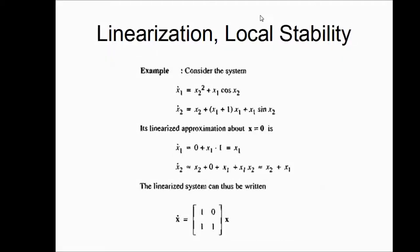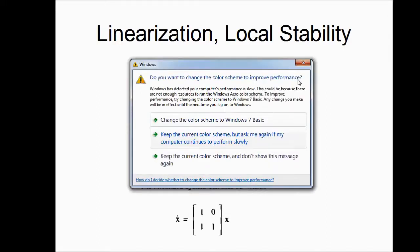Linearization and local stability. If we consider this non-linear system and linearize about the equilibrium point — the equilibrium point for this is (0,0), as may be checked from the right-hand side of these two equations — the linear approximation about (0,0), upon applying the Taylor series approximation, takes this matrix equation form. So x-dot equals this matrix times x is the linearized system of this non-linear system about the equilibrium point of interest.